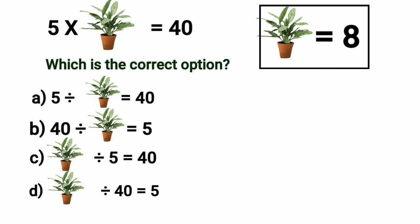Let us write 8 in place of the plant and choose the correct option for this question. In option A, when we put 8 in place of plant, we get 5 divided by 8. But, it is not possible. Now, we will move to the next option. 40 divided by 8.